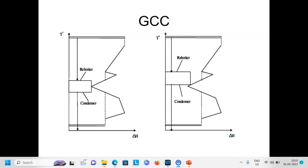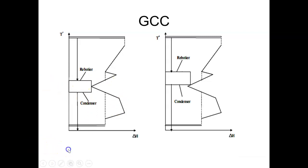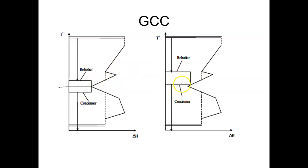On the left-hand side of the screen, we see a column that is not properly placed — the pinch point lies between the reboiler (above pinch) and the condenser (below pinch). There is no benefit in transferring heat between the process and the distillation column in this configuration, as we have discussed earlier. On the right-hand side, the column is placed entirely above the pinch.